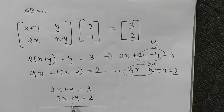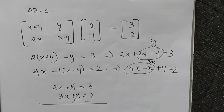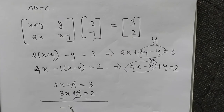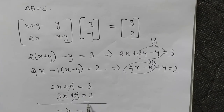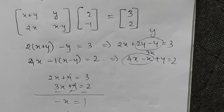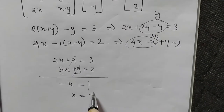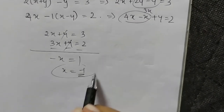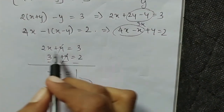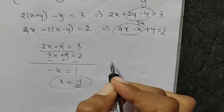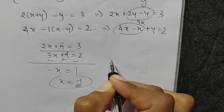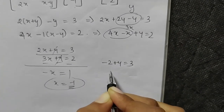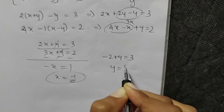Subtracting the equations: y terms cancel, minus x equals 1, so x equals minus 1. Substituting back: 2 times (minus 1) plus y equals 3, giving y equals 5.